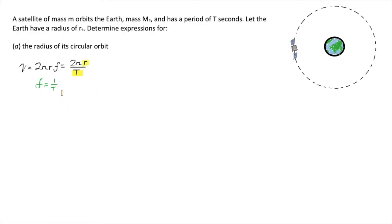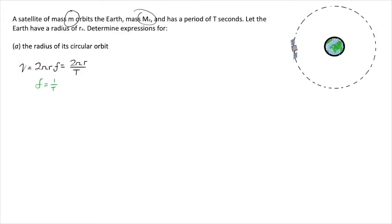That brings up the period of motion and the radius — one thing given, one thing we're looking for — but unfortunately it equates to velocity, which is not something we know right now. Perhaps we can do a dynamics problem to figure out the orbital velocity, equate those expressions, and get something in terms of r, t, the mass of the Earth, and the mass of the satellite. Let's analyze this using Newton's second law.